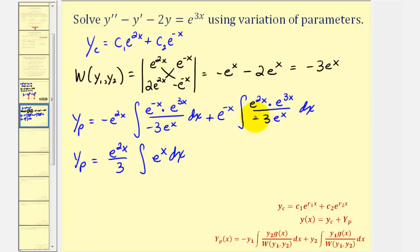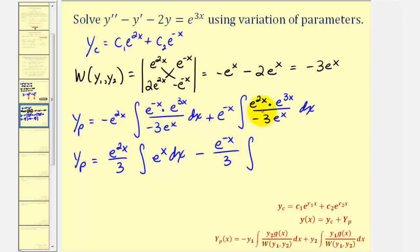Next we have a sum, but then we have a negative, so it's going to be minus e to the negative x. Factoring out the one-third, the numerator in the integrand would be e to the five x divided by e to the x, giving us e to the four x dx.